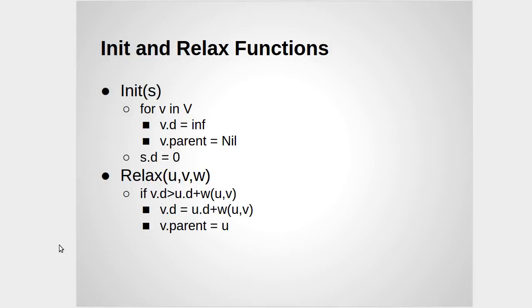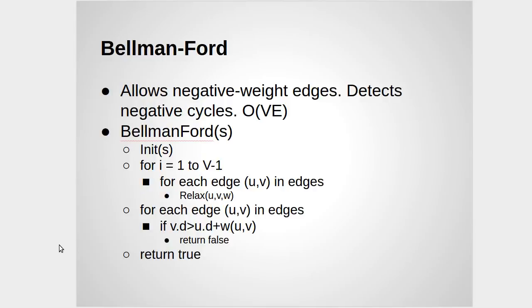The first algorithm that we want to talk about is Bellman-Ford. And the Bellman-Ford algorithm actually allows negative weight edges, and it also happens to detect negative cycles. So this algorithm is order V times E, and when we call it, we give it a start node.